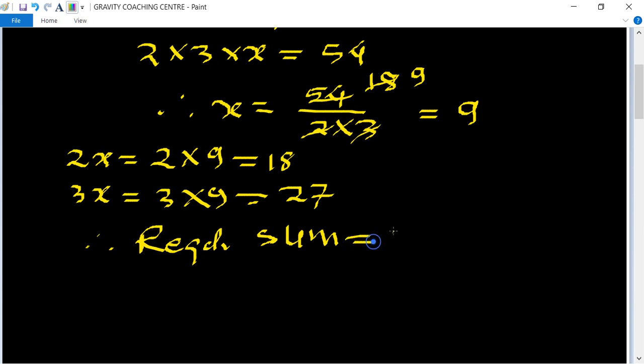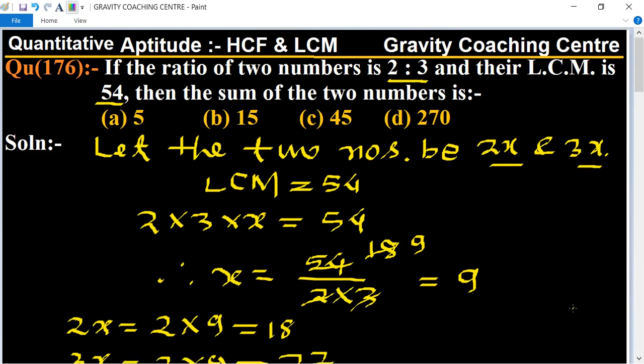18 plus 27 equals 45, which is the required answer. So option C is the correct answer.